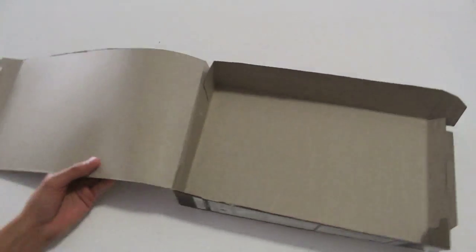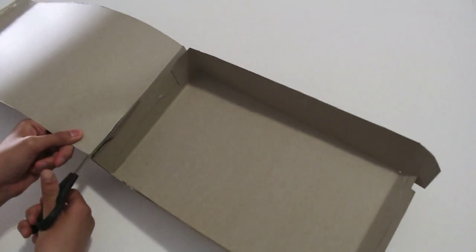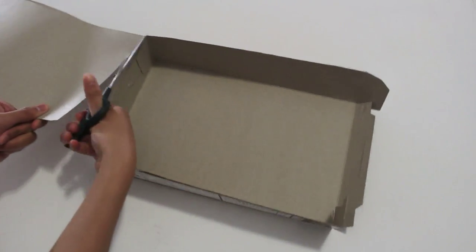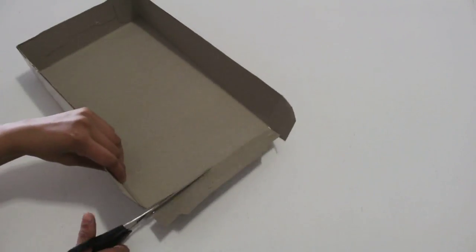Moving on to the second box, it turns out that we don't need the flaps, so you can just cut that right off. And remove the other little flaps as well.